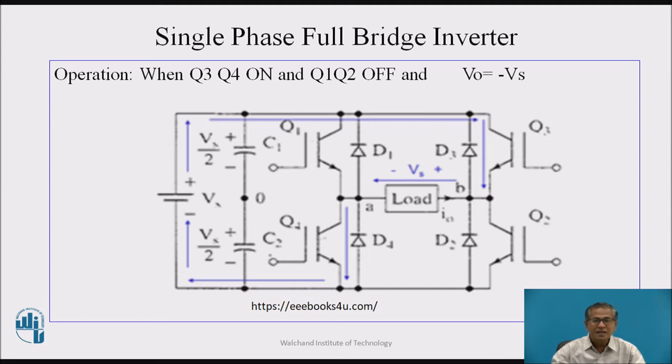The negative half cycle appears across the load. At the same time, Q1 and Q2 are in non-conducting state, and the voltage drop across Q1 and Q2 is Vs.